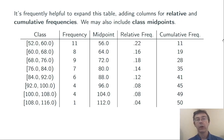So, the midpoints are literally the middle of these intervals. So, I did the average of 52 and 60 to get 56, the average of 60 and 68 to get 64, and so on. We compute relative frequencies by dividing each frequency by the total size of the dataset.